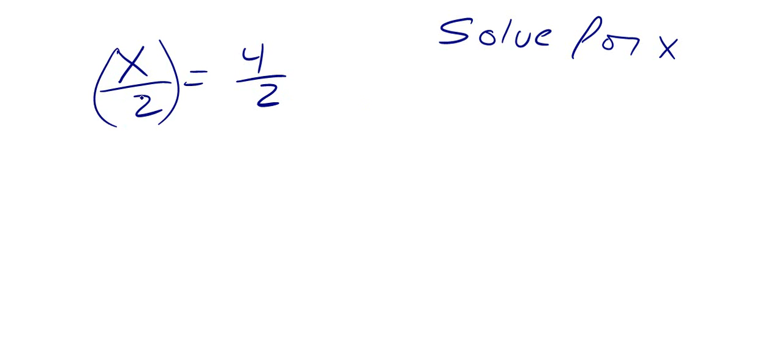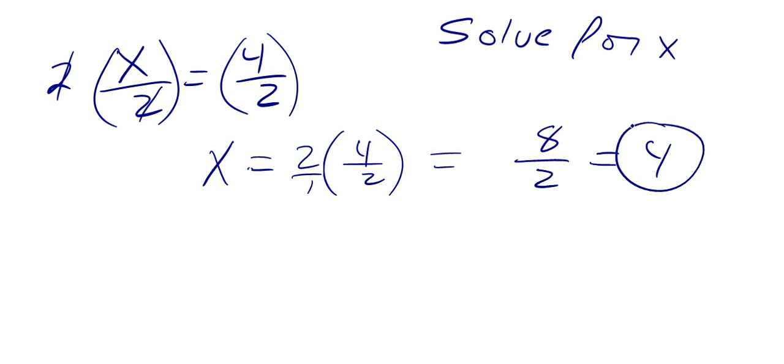So the inverse operation of division here is multiplication. So if you want to get rid of this 2, you've got to multiply both sides by 2. These cancel out, so we're left with x is equal to 2 times 4 divided by 2. And when we multiply this, 2 times 4 is 8 over 2. And that's going to give us a 4, right? That's one way to approach it.